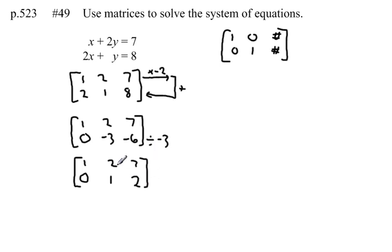Okay, we're almost done. The last thing we need is a 0 in this spot right here. Well, if I were to multiply the bottom row by negative 2 and add that result to give me a new top row, I'd have a 0 in this spot. So let's do that.